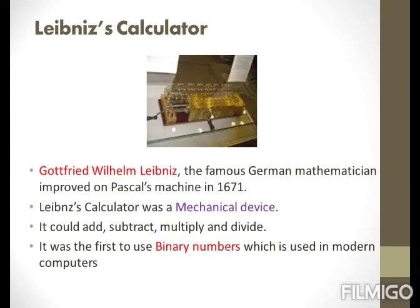Leibniz Calculator. Gottfried Wilhelm Leibniz, the famous German mathematician, improved on Pascal's machine in the year 1671. The Leibniz Calculator was a mechanical device. Apart from performing addition and subtraction, the Leibniz Calculator could also do multiplication and division. Leibniz was the first one to use the binary number system, which is the fundamental principle for the operation of modern computers.